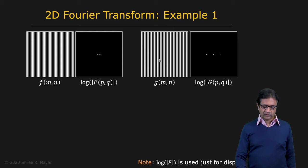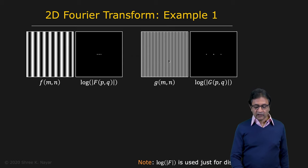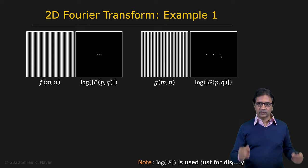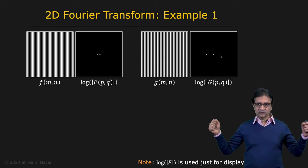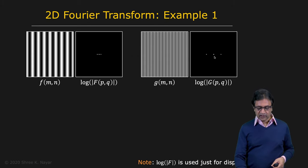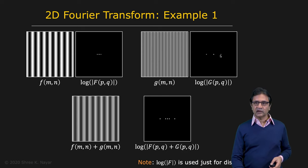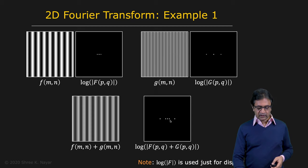Here's another cosine function which is of higher frequency. Because it's of higher frequency, you still get three dots, but the dots are now separated from each other more because you're increasing the frequency — frequency increases as you move away from the center. And if you simply add these two images or take the average of these two images, you're going to get five dots: the center dot again, and then two each for each of the two images.